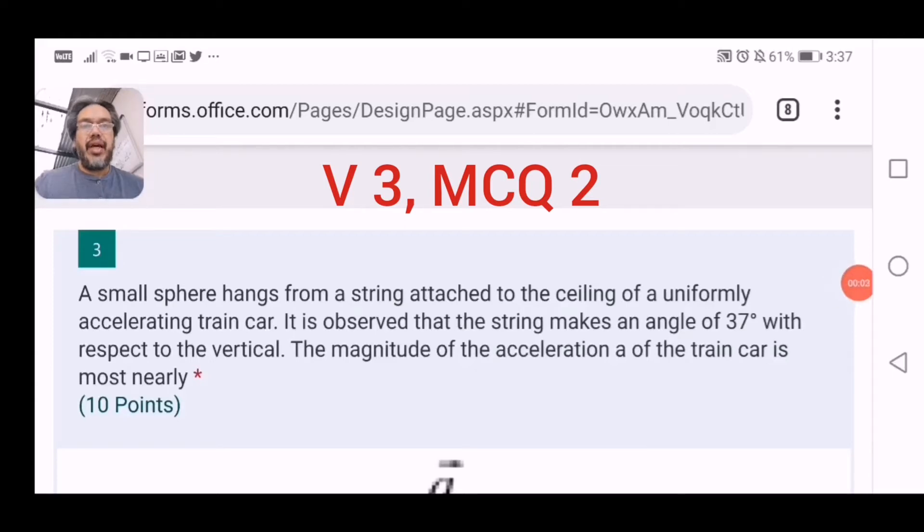A small sphere hangs from a string attached to the ceiling of a uniformly accelerating train car. It is observed that the string makes an angle of 37 degrees with respect to the vertical. The magnitude of the acceleration A of the train car is most nearly.